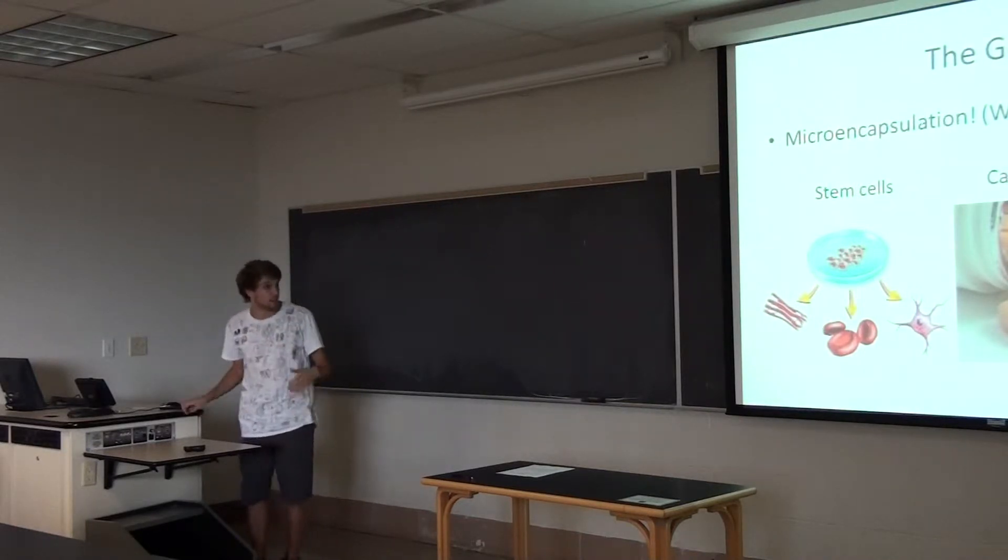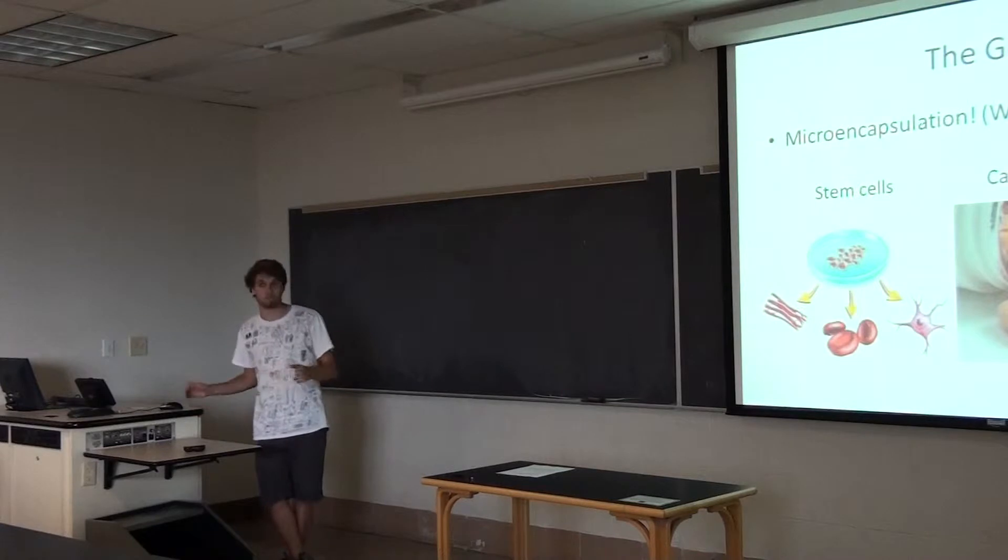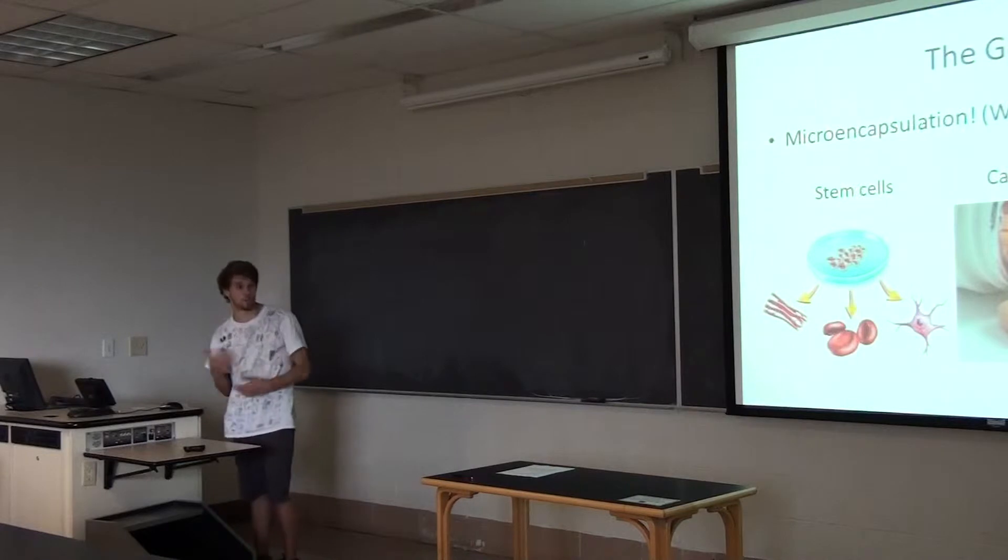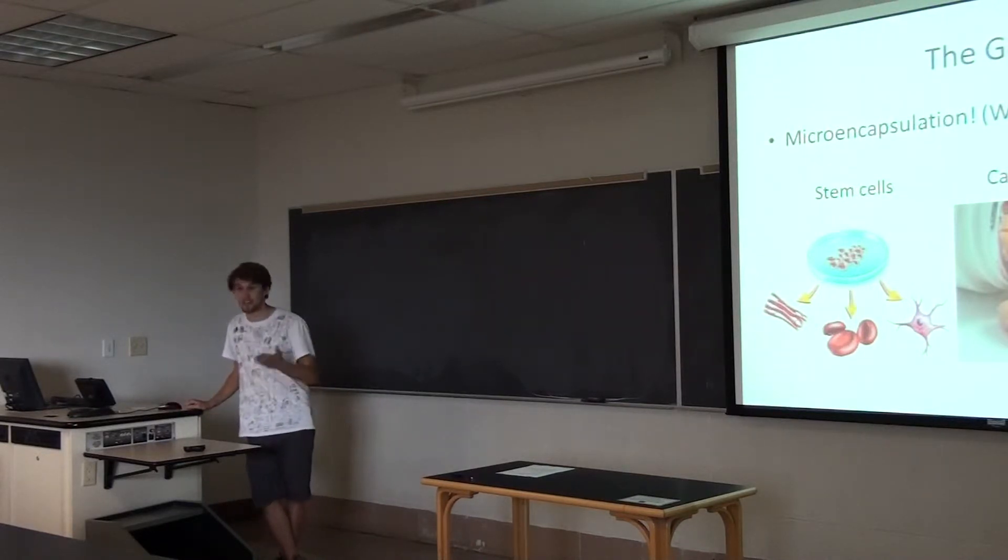The first would be stem cells. Stem cells are cells that can become any other type of cell in the body, so they're really useful. Let's say, for instance, someone gets a big burn on their arm. We can help with stem cells, we can make that heal faster. And microencapsulation enhances that process.